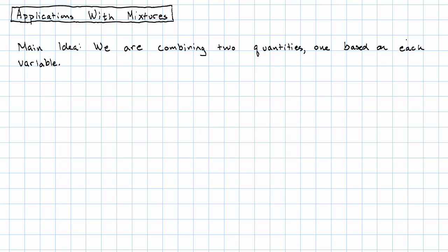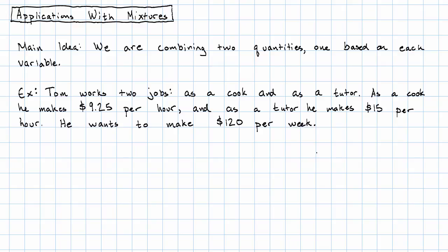Here's an example. Suppose that Tom works two jobs, one as a cook and the other as a tutor. As a cook he makes $9.25 per hour, and as a tutor he makes $15 per hour. He wants to make $120 per week.